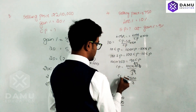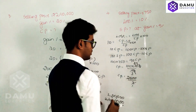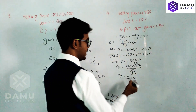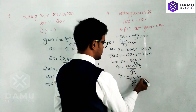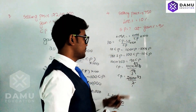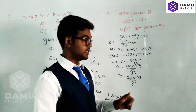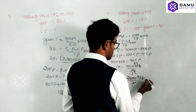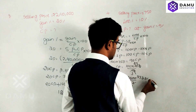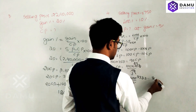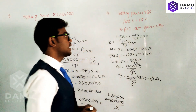Completing the division: 75000 divided by 90 gives approximately 833 rupees. So the cost price is 833 rupees.